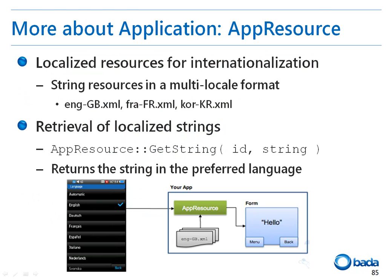The OSP App namespace includes the AppResource class. This class is used to acquire the string resources appropriate to the current system setting from resources created for various languages. The resource consists of ID and string pairs, so we can acquire the localized string for an ID using the getString function of the AppResource class.